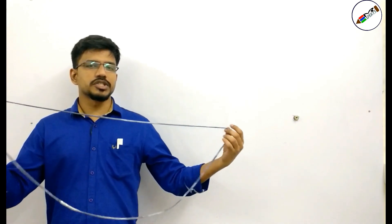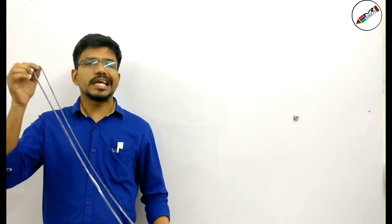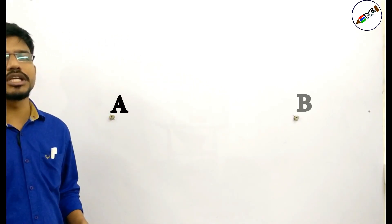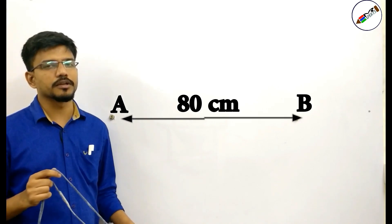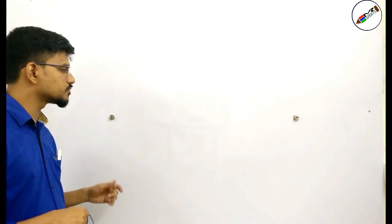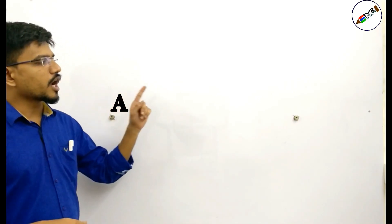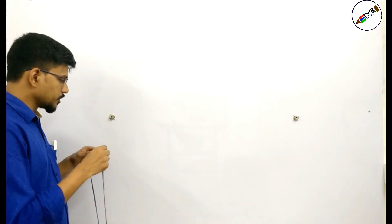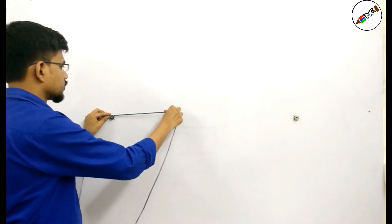In order to solve this problem, we are going to take the help of a thread. We are going to use this thread which is of 180 centimetres. The distance between the 2 points A and B is 80 centimetres. Using this thread, we are going to find out all such points such that the sum of their distances from point A and point B will always remain constant.